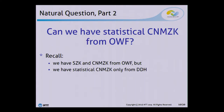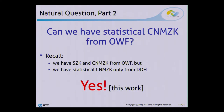Given the result of Orlandi et al., the next natural question to ask is whether we can have statistical concurrent non-malleable zero-knowledge from one-way functions. In other words, since we have statistical zero-knowledge and concurrent non-malleable zero-knowledge from one-way functions, but we have statistical concurrent non-malleable zero-knowledge only from the DDH assumption, there's a clear gap, and the question is whether we can close this gap.